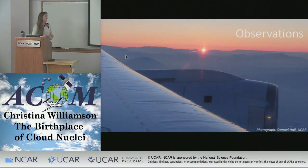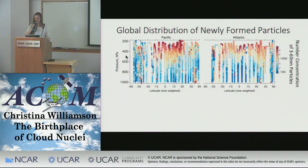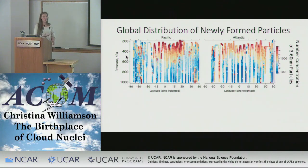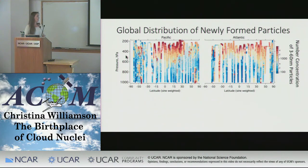I'll now talk about what we're seeing on the ATom mission. All results are from the first ATom deployment, which took place in Northern Hemisphere summer 2016. I'm showing curtain plots with latitude on the x-axis — sign-weighted to better represent atmospheric volume — and altitude represented by pressure on the y-axis. The colored lines are the flight tracks, with colors representing the number concentration of particles between 3 and 60 nanometers — particles likely from the new particle formation process. Their presence shows us where new particle formation is taking place, and notably, high up in the tropical upper troposphere we're seeing really high concentrations of these small particles.